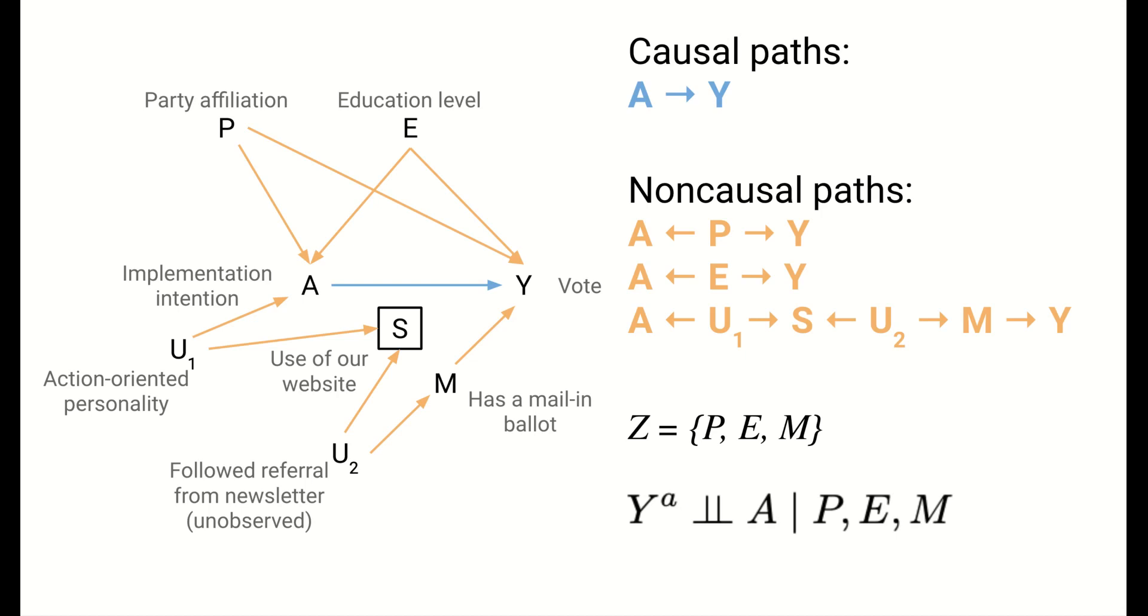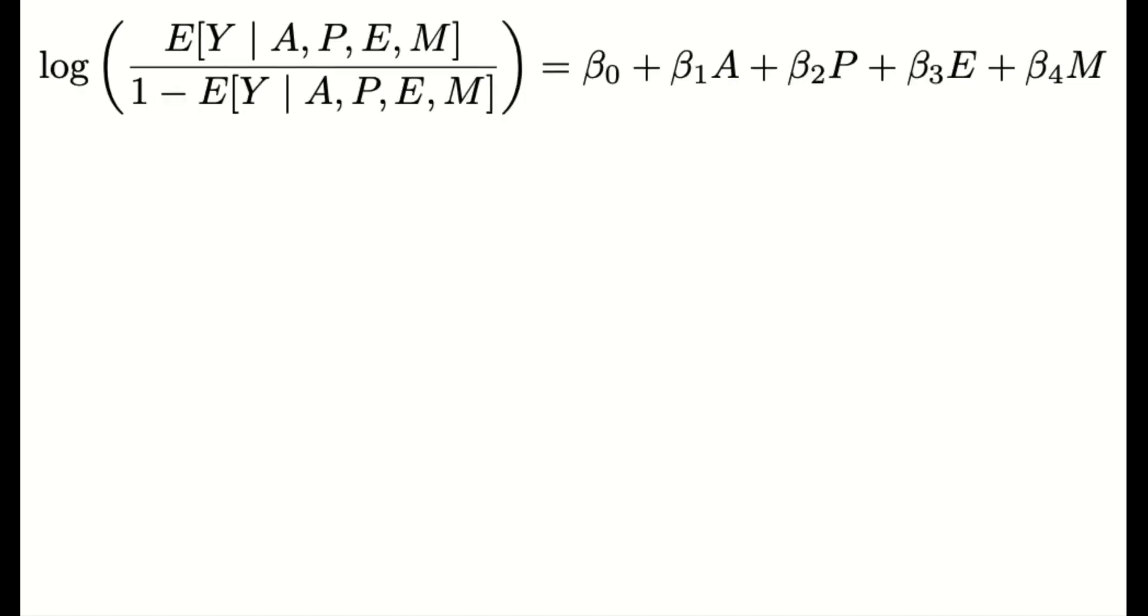This means that we have exchangeability of the voting potential outcomes across treatment groups conditional on P, E, and M. This means that we can look within subsets of the data defined by party, education, and mail-in ballots and fairly compare the average outcome, the probability of voting, between the treatment groups. You can do this in a straightforward way with regression models. Because the outcome, voting, is binary, we can fit a logistic regression model to simultaneously quantify the relationship between treatment and outcome while conditioning on P, E, and M.